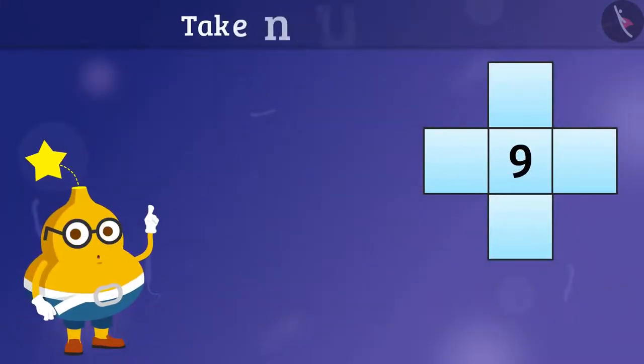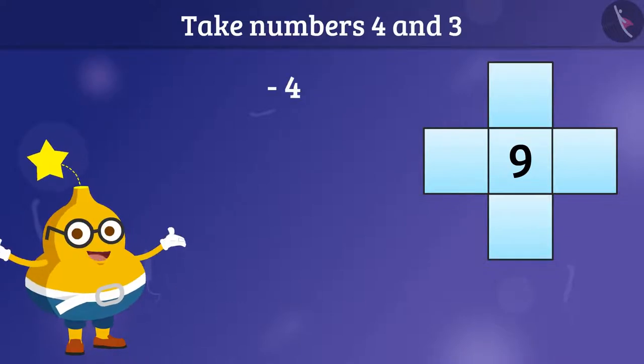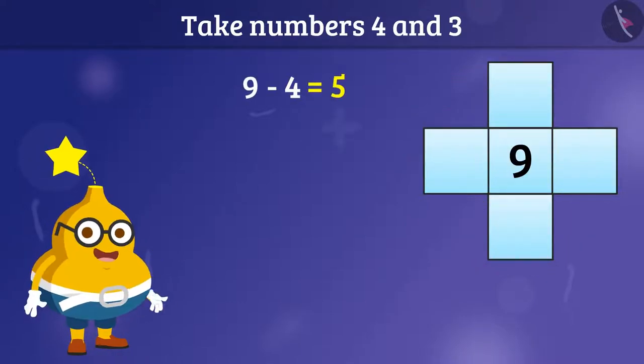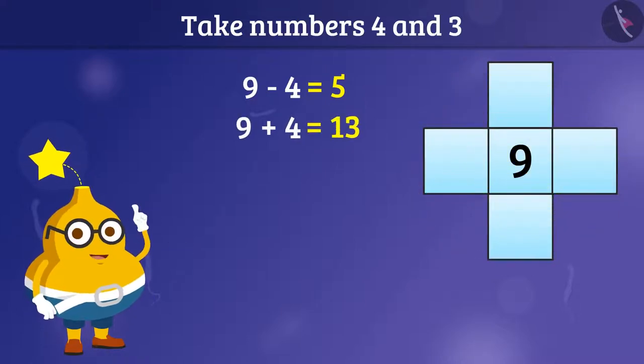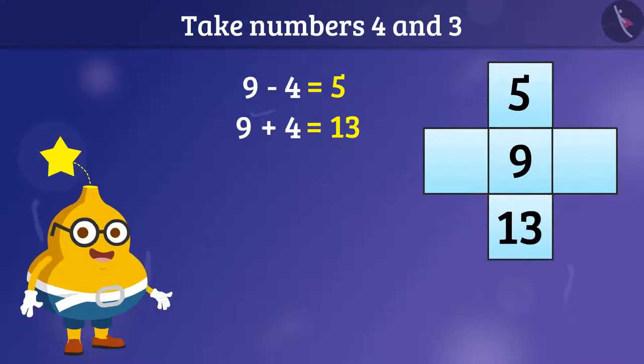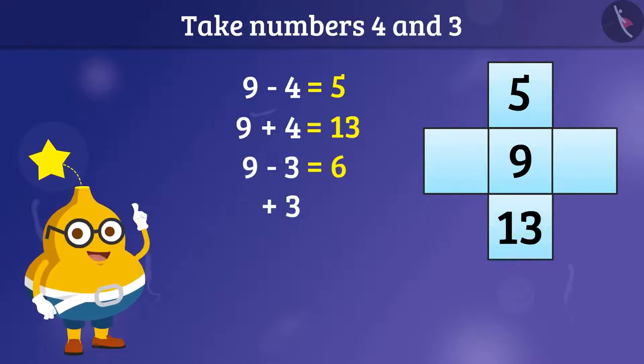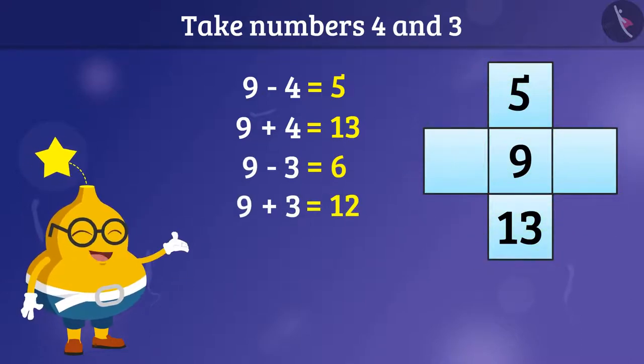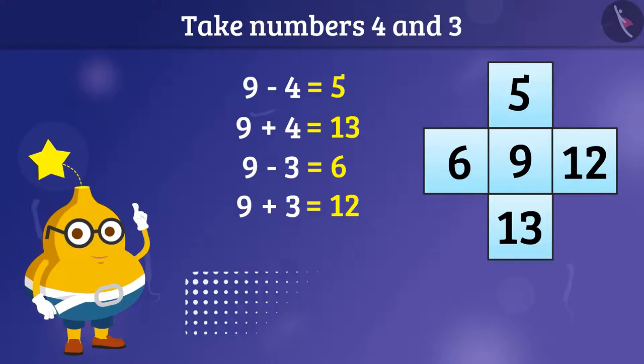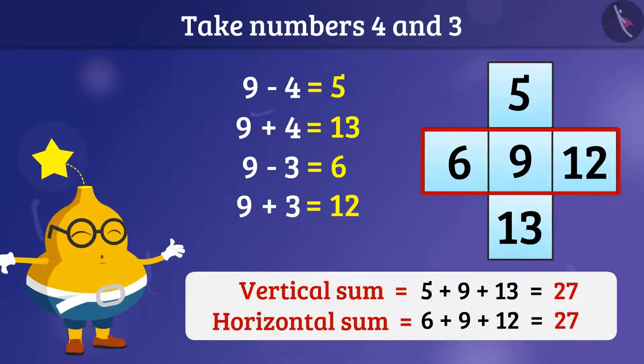Let us take numbers 4 and 3. Now, by subtracting 4 from 9 and adding 4 to 9, we can fill the vertical cells like this. In the same way, by subtracting 3 from 9 and adding 3 to 9, we can fill the horizontal cells like this. Now, we can check the vertical and horizontal cells like this. See, it is 27.